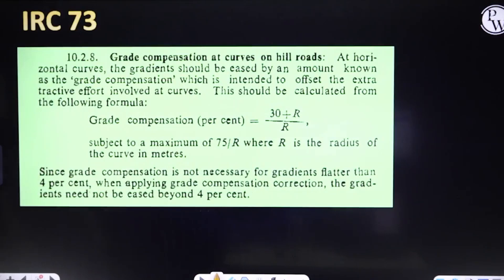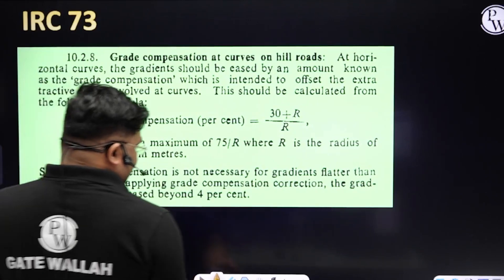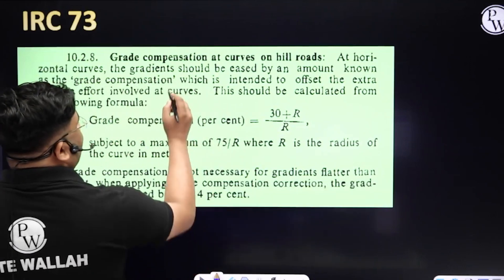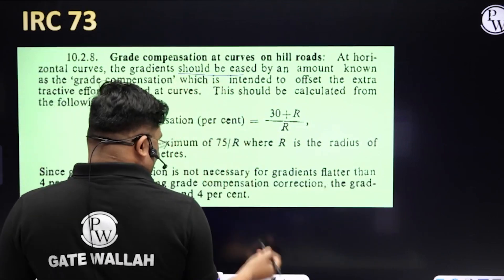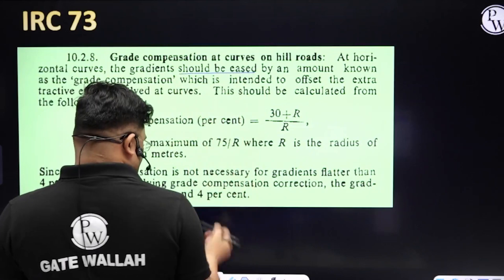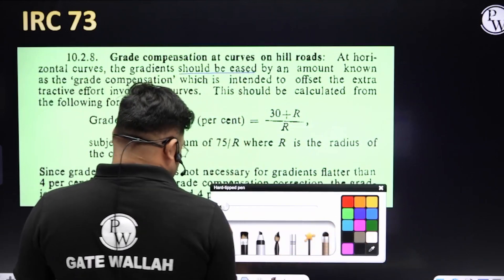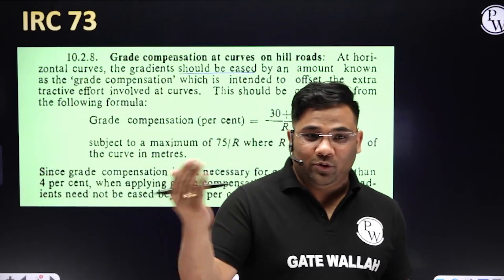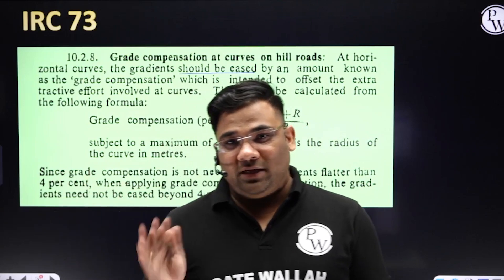Let us go straight to what IRC 73 speaks and find some key points. The code states: 'Grade compensation at curves on hill roads — at horizontal curves, the gradient should be eased by an amount known as grade compensation.' So here, 'eased' means what? Reduced. Should be eased means should be reduced. We are decoding the code — understanding the code language in simple terms.